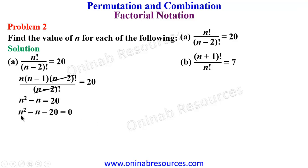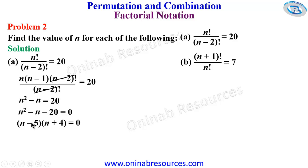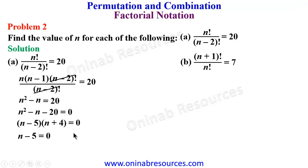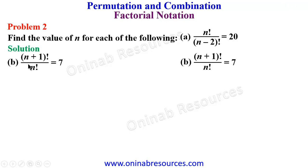We factorize: we need two factors of negative 20 whose sum gives negative 1, the coefficient of n. Those factors are negative 5 and positive 4, since negative 5 times 4 equals negative 20 and negative 5 plus 4 equals negative 1. This gives n minus 5 times n plus 4 equals 0. Only n minus 5 equals 0 gives a positive value of n, so n equals 5. That's the end of the solution to Problem 2a.